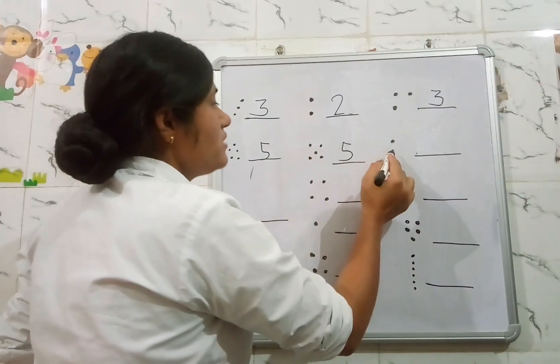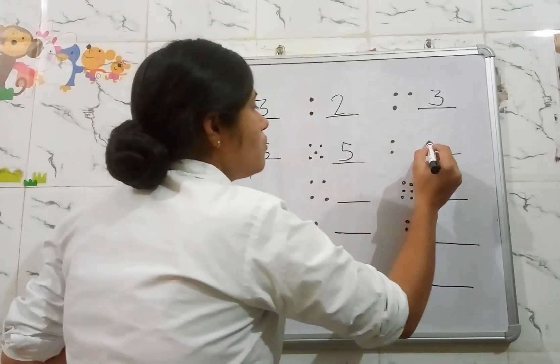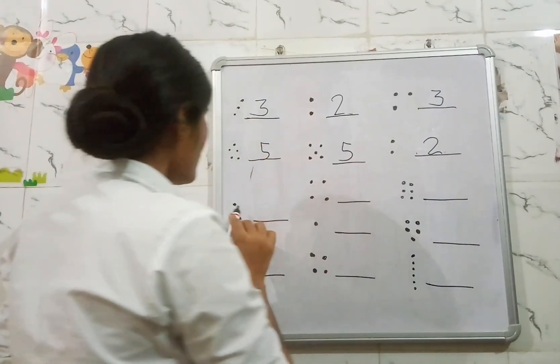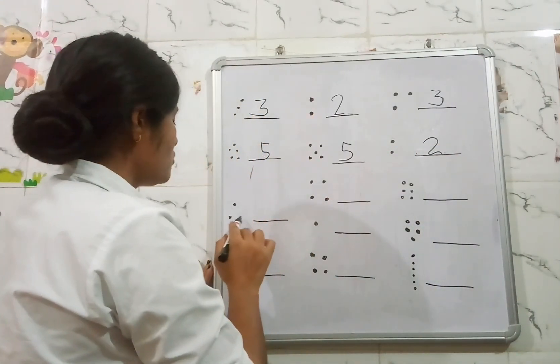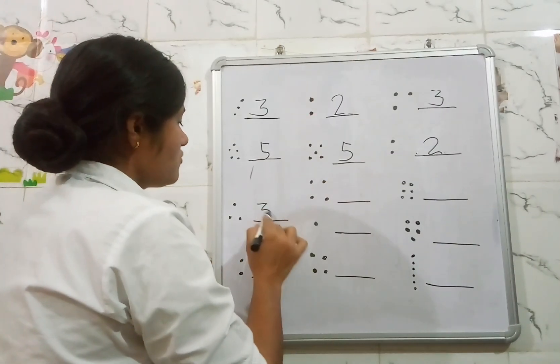1, 2. There are 2 dots, so we will write here 2. Now count: 1, 2, 3. That's 3. Now we will write here 3.